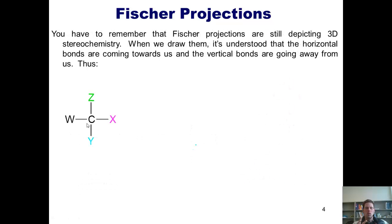To recap, I want you to remember that Fischer projections still are depicting three-dimensional stereochemistry. Once again, when we draw them, it's understood that the horizontal bonds are coming towards us and the vertical bonds are going away from us. Thus, this Fischer projection is really just trying to show us this. And what in the world is that? Well, that, if we were drawing it using a traditional line bond structure with wedges and dashes, is this molecule shown here.